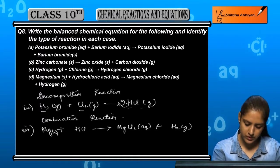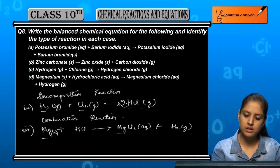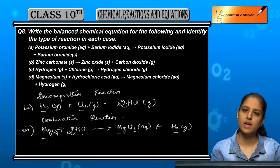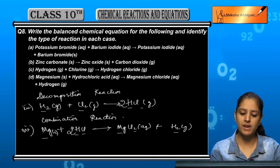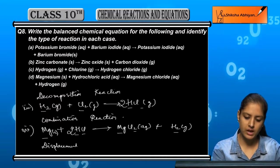So if we look at this case, Mg 1, Mg 1. H and H are 2, so this is 2. Cl and Cl are 2, so this is 2. So H is 2. So this is a balanced equation and it is a type of displacement reaction.